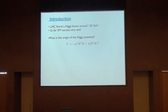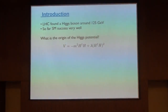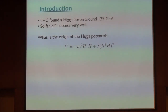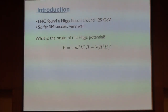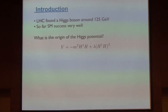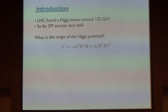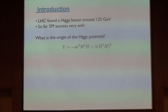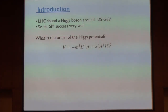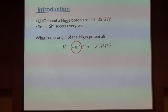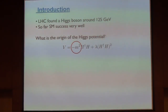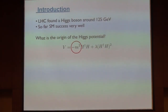As you know, LHC found the 125 GeV Higgs, which is very nice. And so far, the standard model has succeeded very well. But the standard model itself still has mysterious features. For example, the Higgs potential looks very artificial, very mysterious. Especially this mass term looks like a mystery.